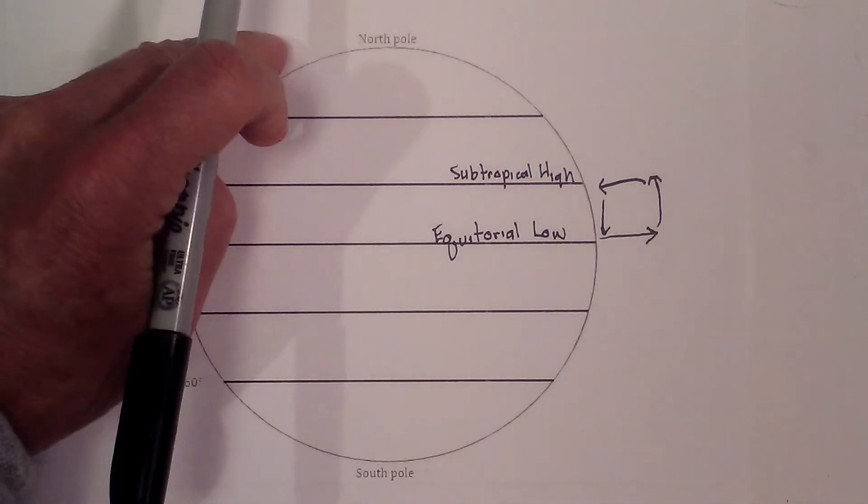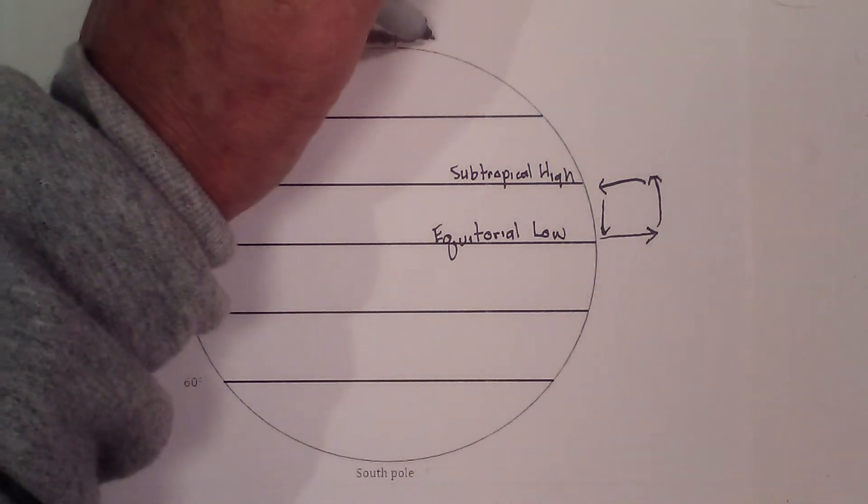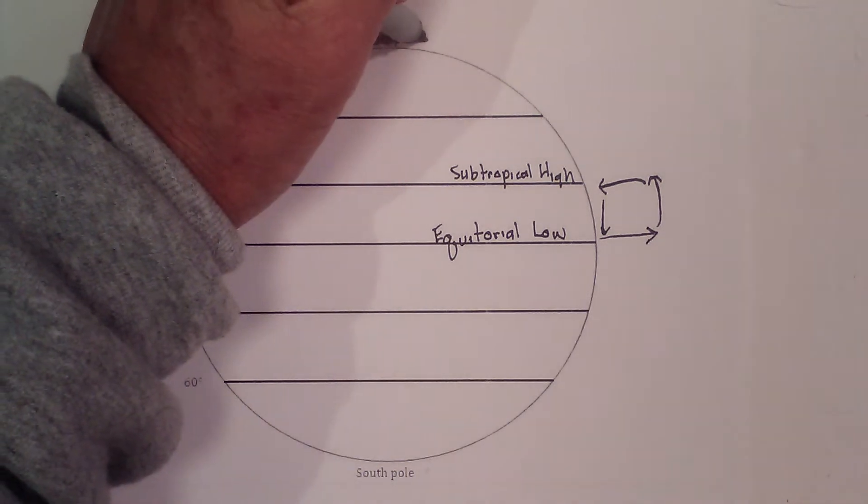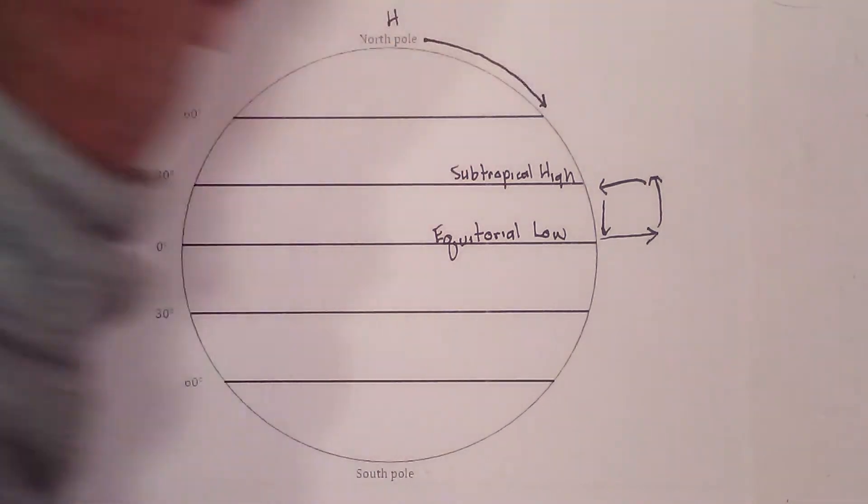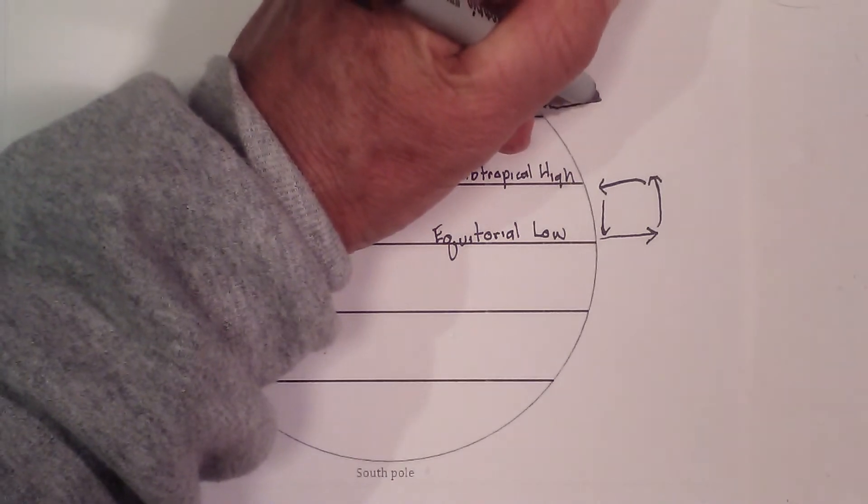Now let's jump to the north pole. The north pole is very cold, so it has a very high pressure system. The air is going to move down south until it gets to about 60 degrees, and it begins to warm and rise.